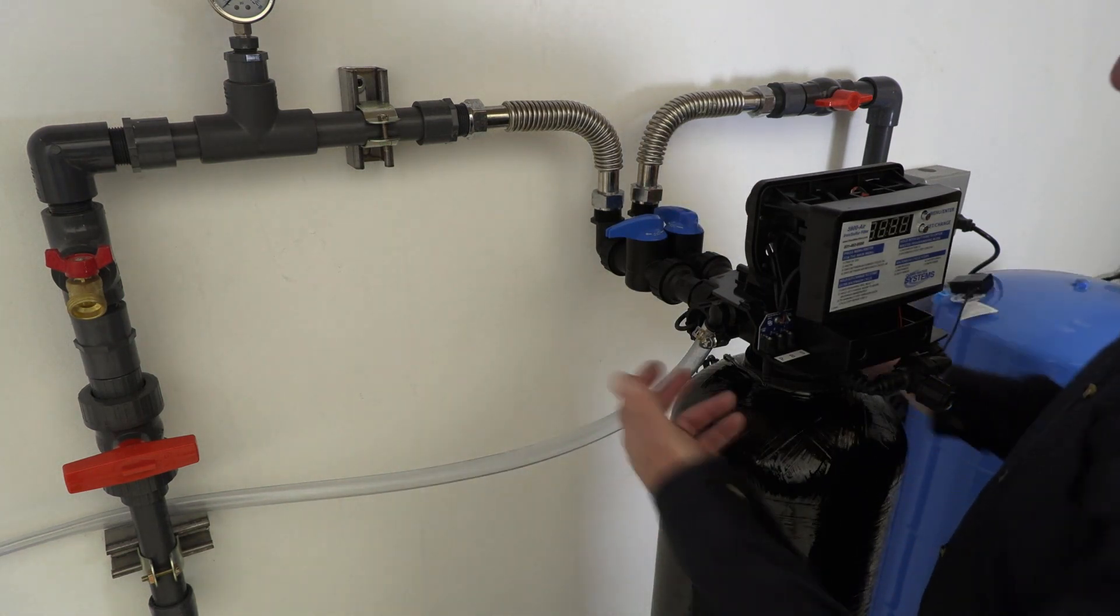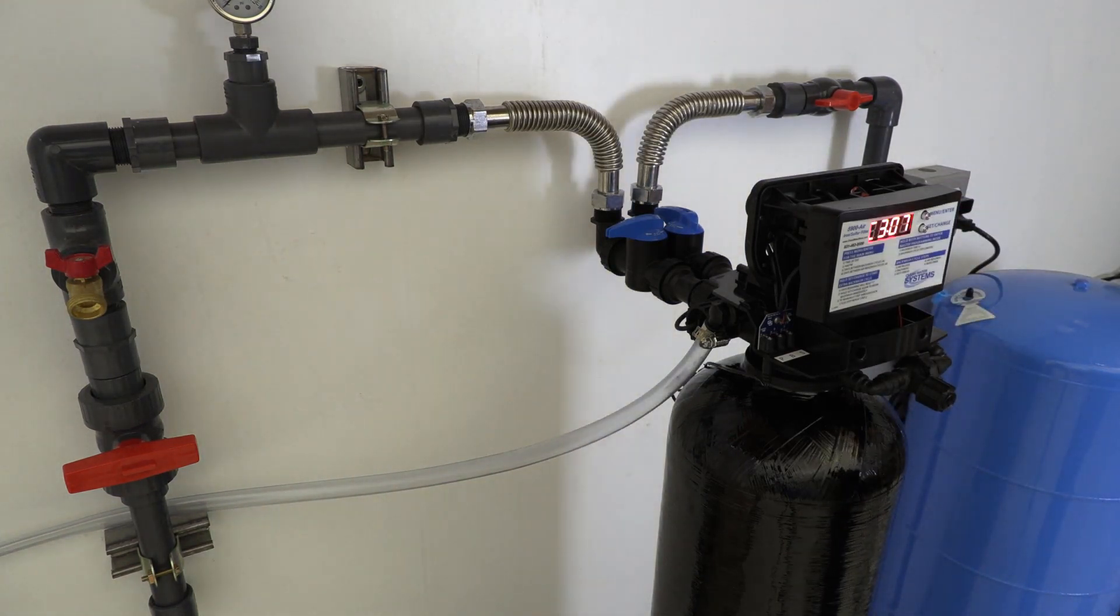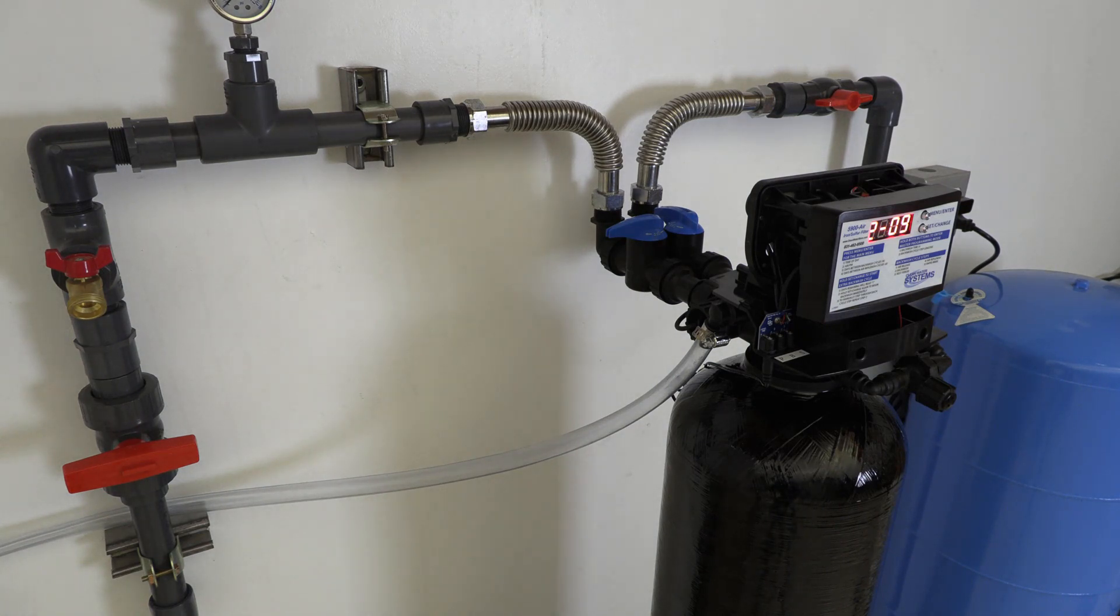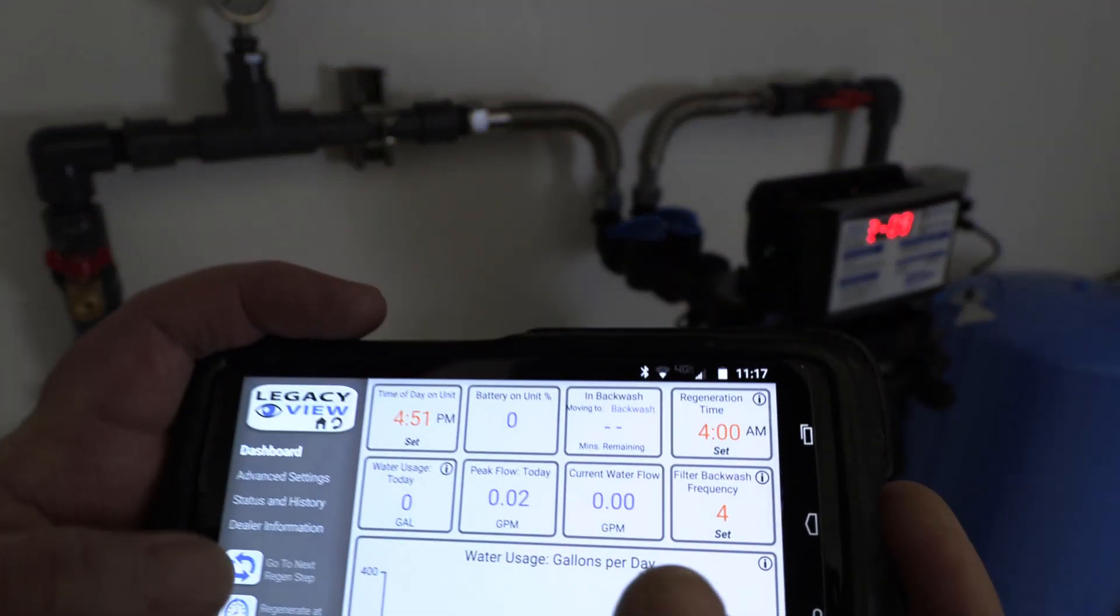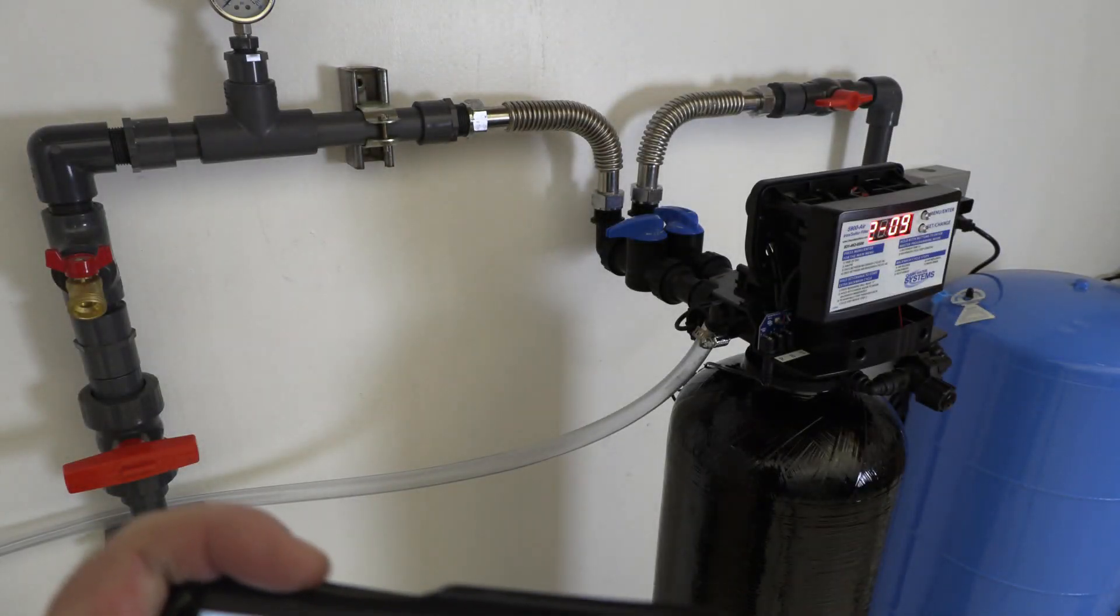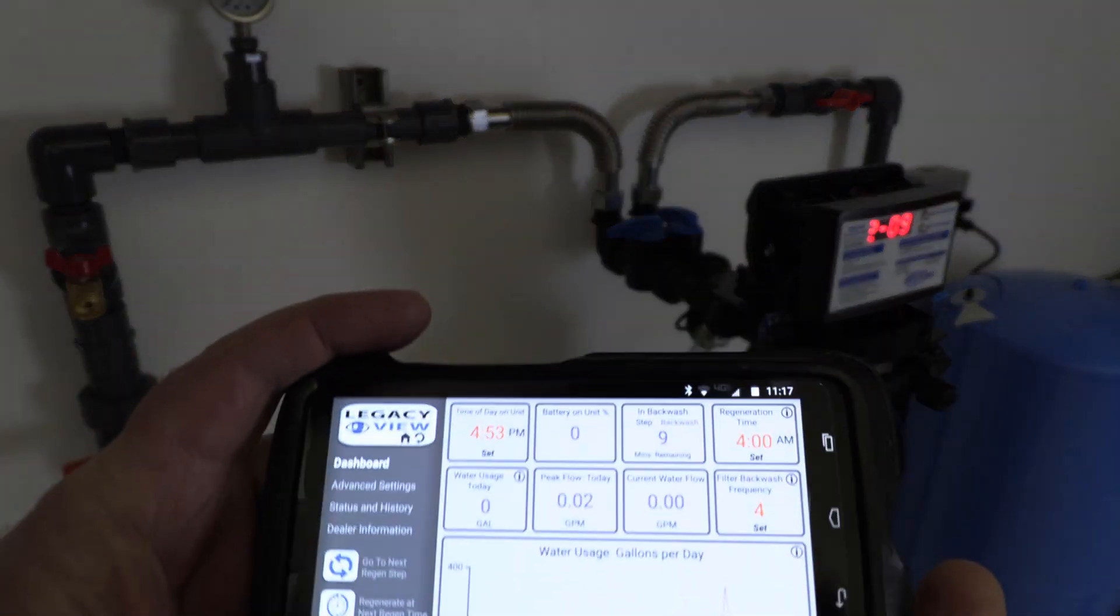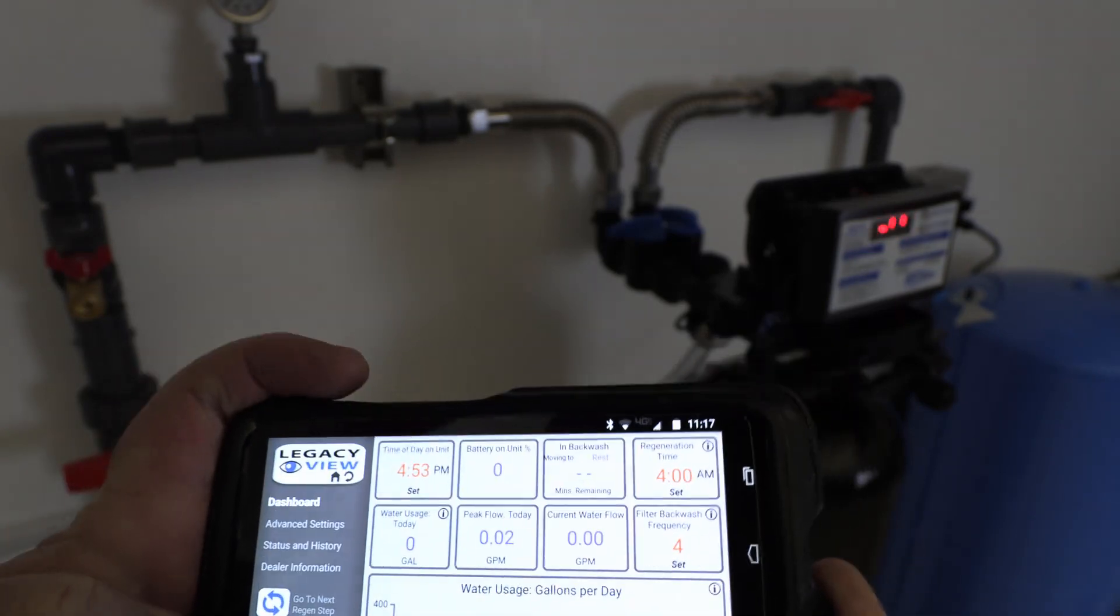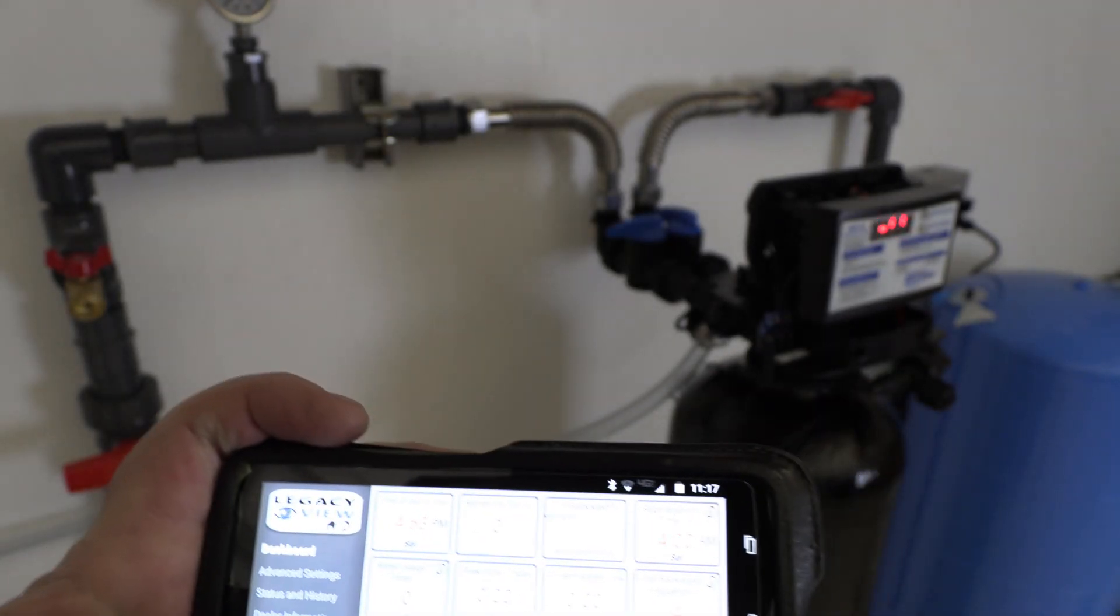Okay, so what you're going to do now is go ahead and let your cycle time out. Looks like we lost our Bluetooth connection there. Okay, we're going to go to the next regen. We're going to skip three and four, and we're going to go right to five.